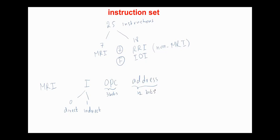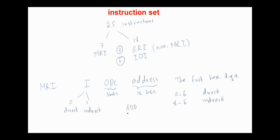The address field is 12 bits and specifies the address of the operand. The first hexadecimal digit ranges from 0 to 6 in direct mode, and from A to E in indirect mode. Each instruction is assigned a three-letter symbol to facilitate writing symbolic programs — for example, ADD, STA (store), CMA (complement accumulator), et cetera.